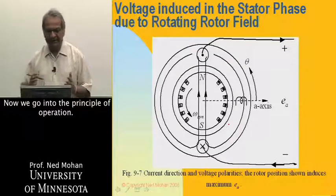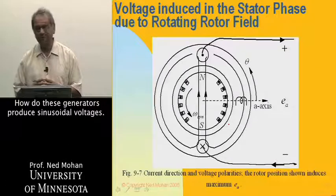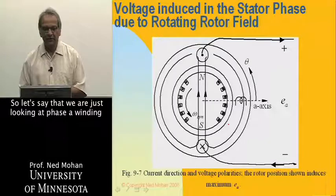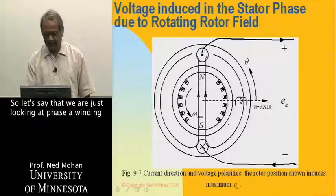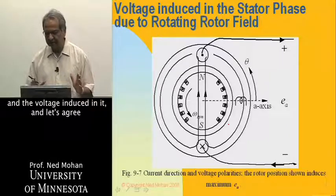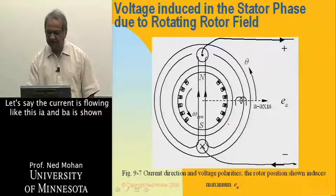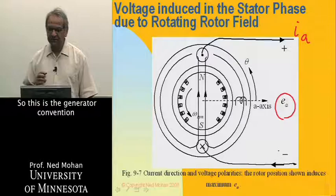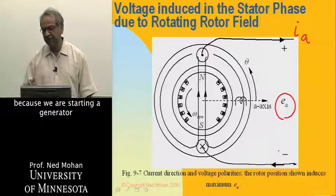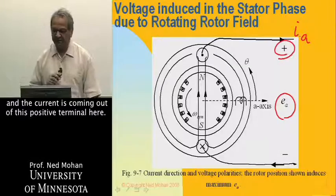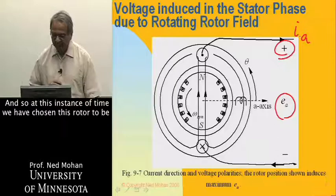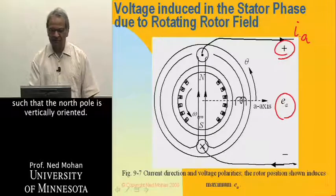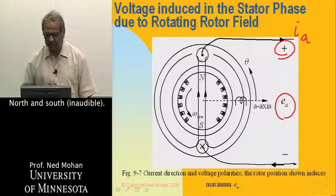Now we go into the principle of operation. How do these generators produce sinusoidal voltages and in turn produce, when you supply it through a prime mover? So let's say that we are just looking at phase A winding and the voltage induced in it, and let's agree on the current direction. Let's say the current is flowing like this here, IA, and EA is shown with this plus minus polarity over here. So this is the generator convention because we are studying a generator and the current is coming out of this positive terminal here.